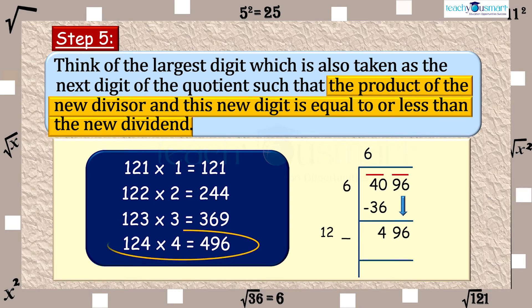Here we have 124 multiplied by 4 equals 496. Divide and get the remainder.